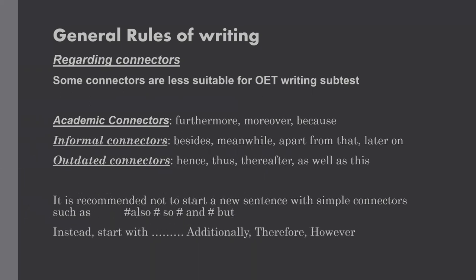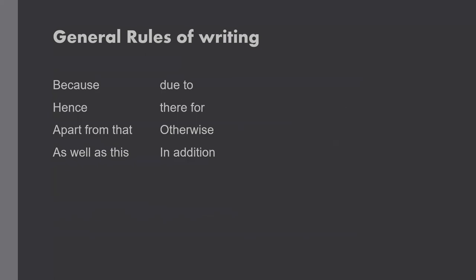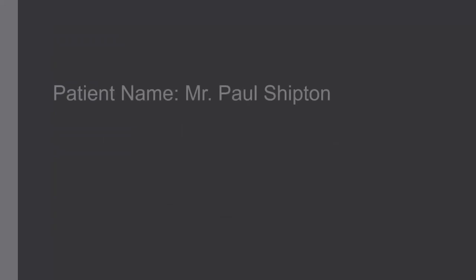Instead of those simple connectors, you can start with additionally, in addition, therefore, or however. And instead of because, hence, apart from that, or as well as this, you can use therefore, otherwise, or in addition. I hope you understood which connectors we have to use in OET writing.